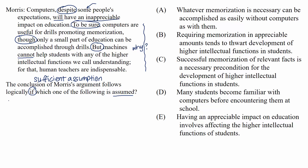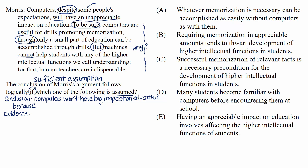In a nutshell, Morris is saying computers can do some good things, but they won't have a big impact on education because machines can't help students with higher intellectual functions. The last part of the passage about teachers is sort of a parenthetical — it doesn't add anything material to the argument, so we can consider it background or context.